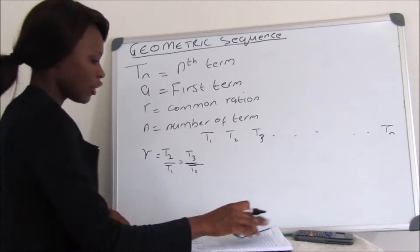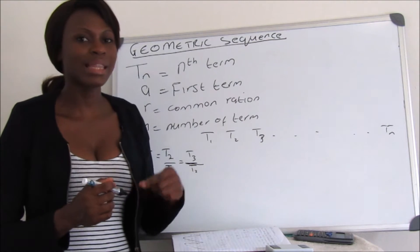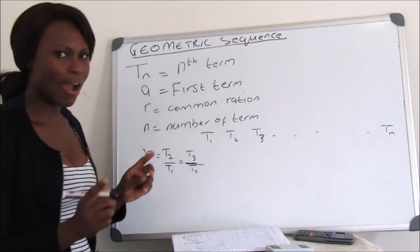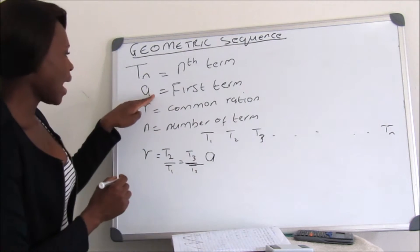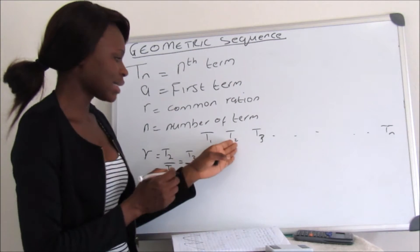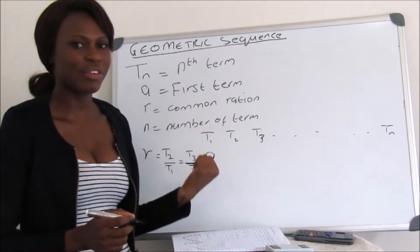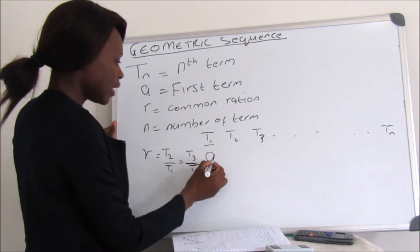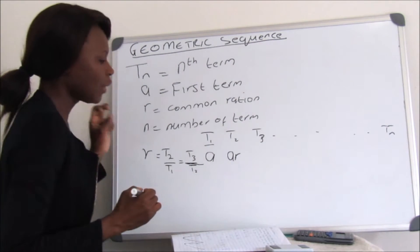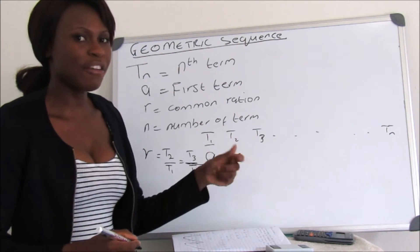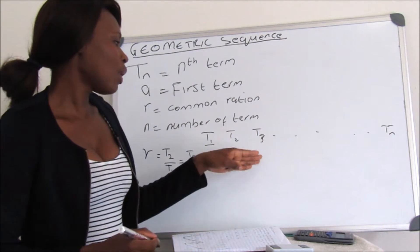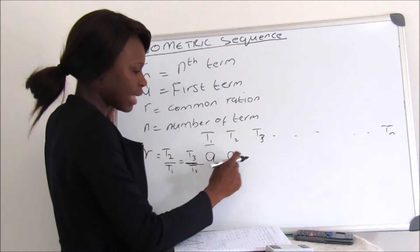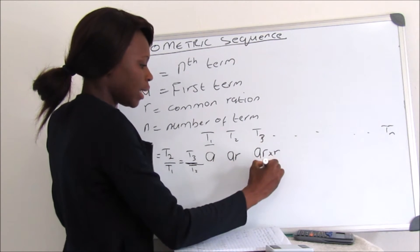With Geometric Sequence, to get the next term you multiply the previous term by the common ratio. So if our first term is A, then to get T2 we multiply the previous term by the common ratio, so T2 equals A multiplied by R, which is AR. Then T3 equals the previous term multiplied by R again, giving AR squared.